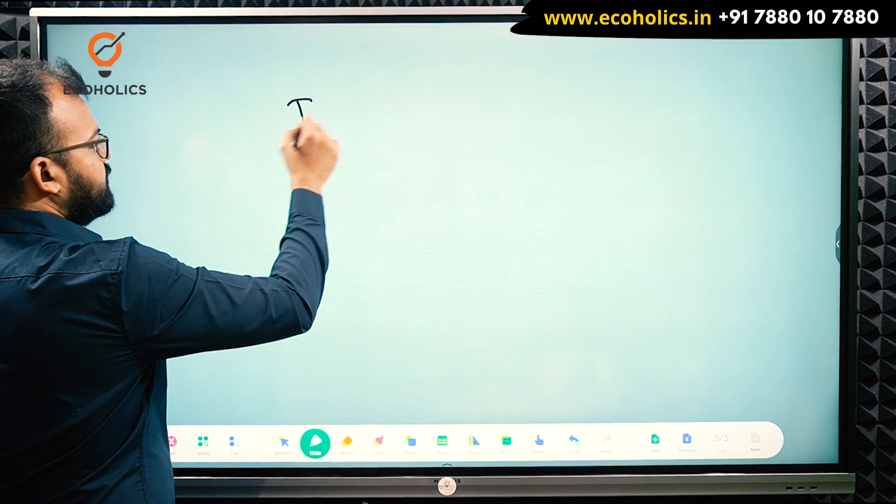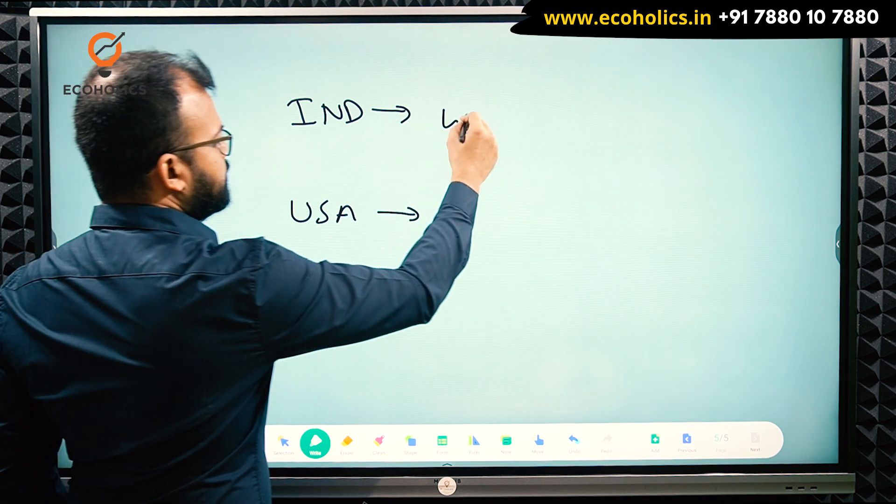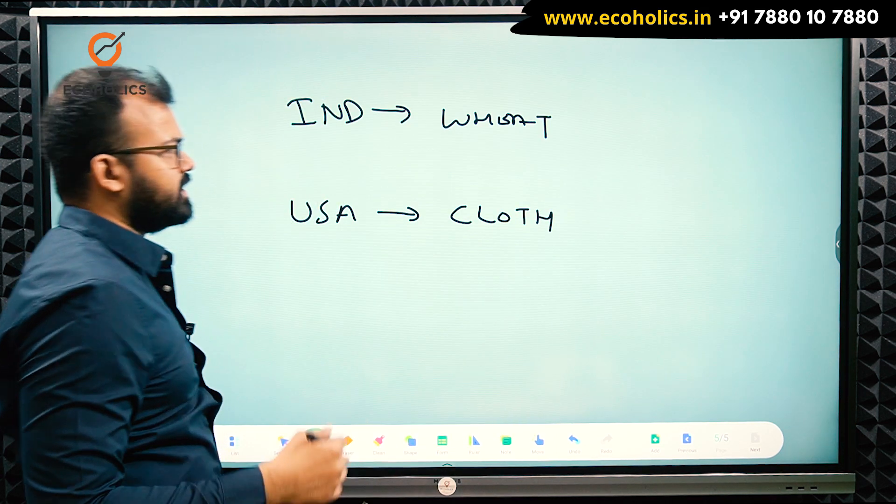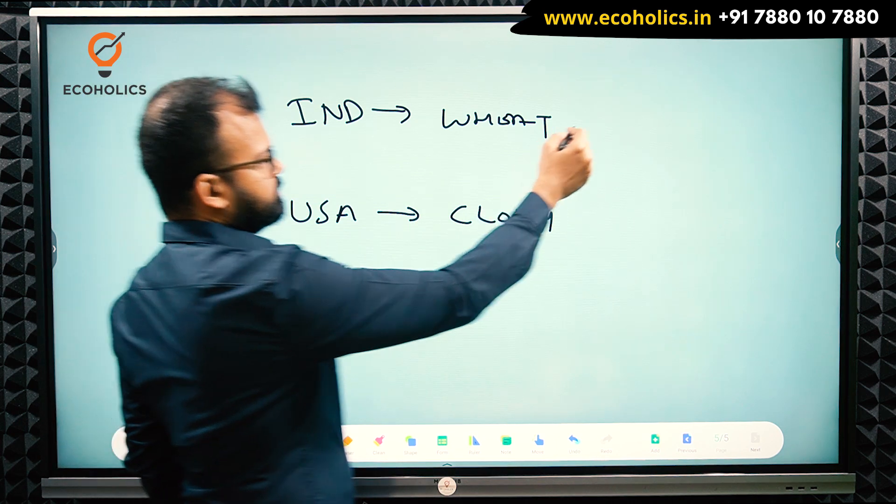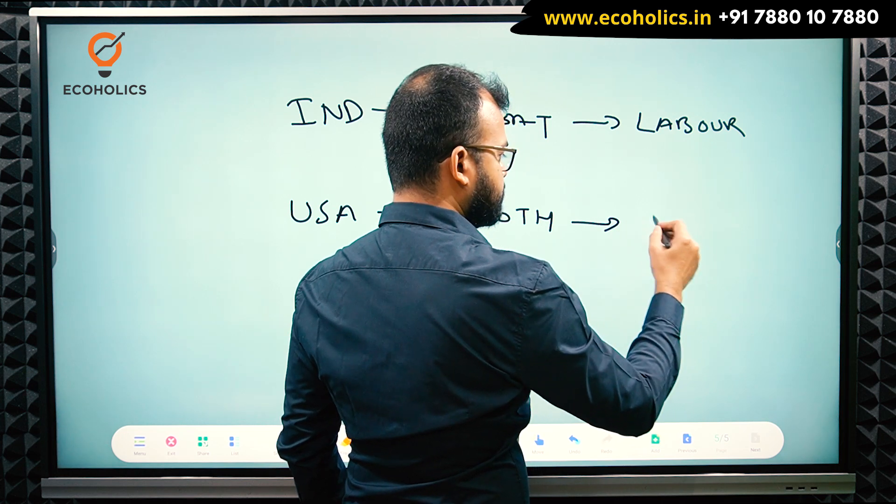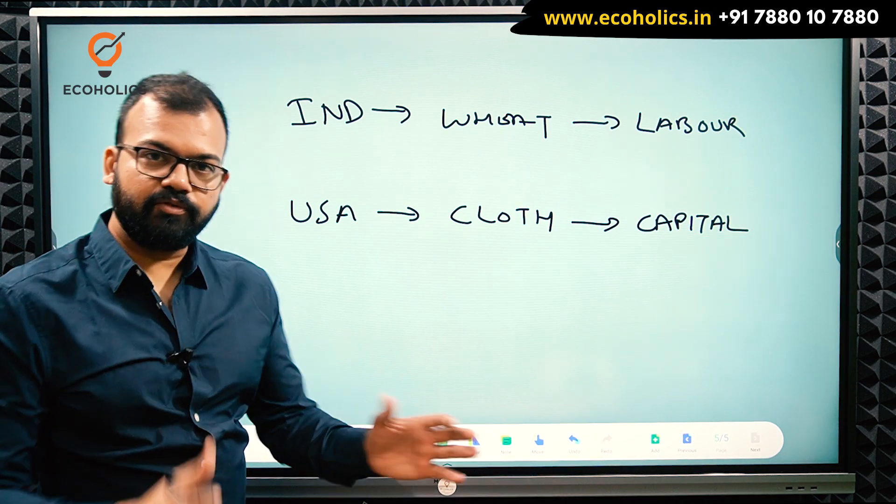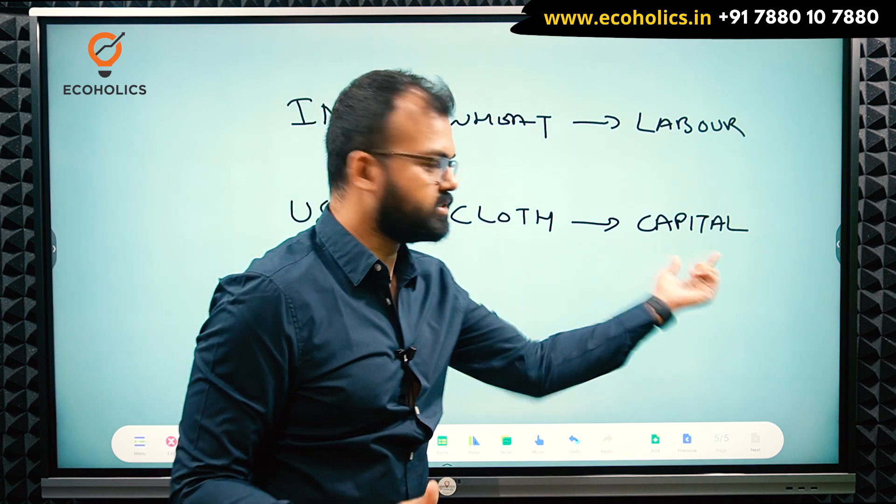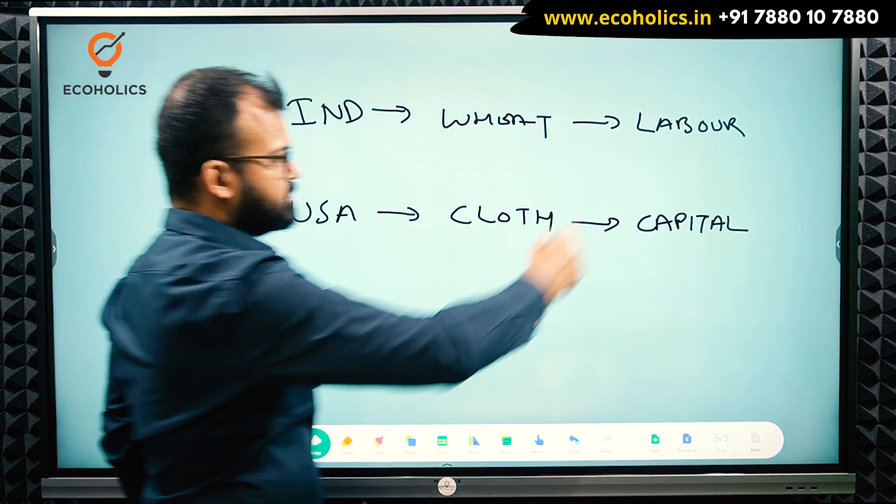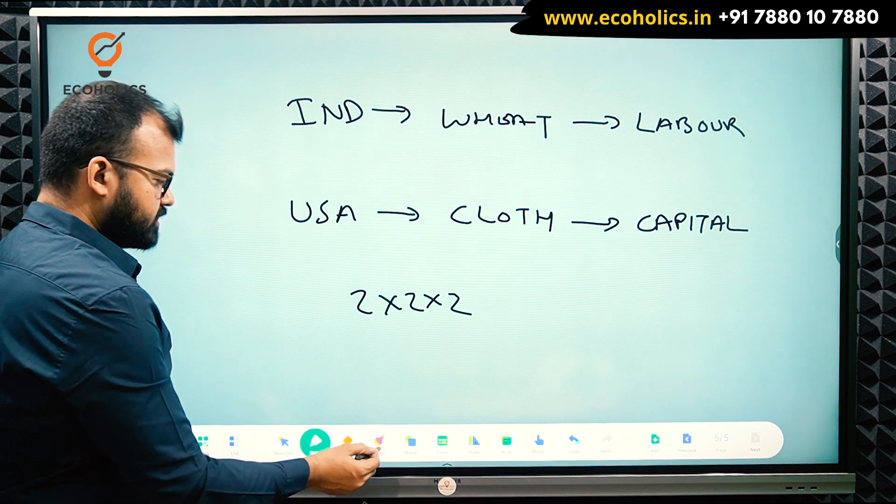Now we see, for example, India and United States of America. Suppose India is expert in wheat and USA is expert in cloth. It's a very simple example. Here you can say wheat, which is a labor-intensive commodity. And cloth, we can say is a capital-intensive commodity. Now what Heckscher-Ohlin said? Before Heckscher-Ohlin, it was only labor. This is the biggest improvement Heckscher-Ohlin provided. That's why it's called modern theory. You can say two countries, two commodities, two factors. That is why this model makes the assumption of 2x2x2. It's very simple.